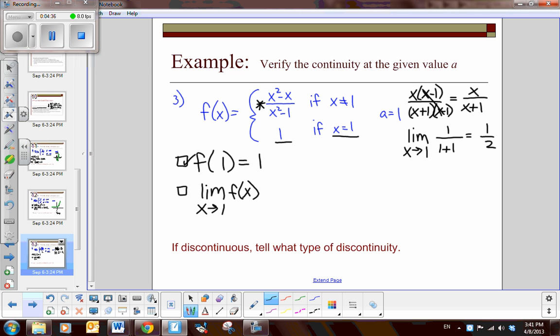You see the limit would be 1 half for the first piece, but the limit is 1 on the second piece, so they are not approaching the same. Since they're approaching different numbers, we have a broken graph, so we have a jump discontinuity.